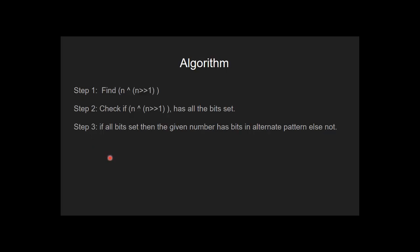Let's see how to solve this problem. First we right shift n by 1, and then we find XOR of n with modified n. If the result has all bits set, then the given number has bits in alternate pattern.